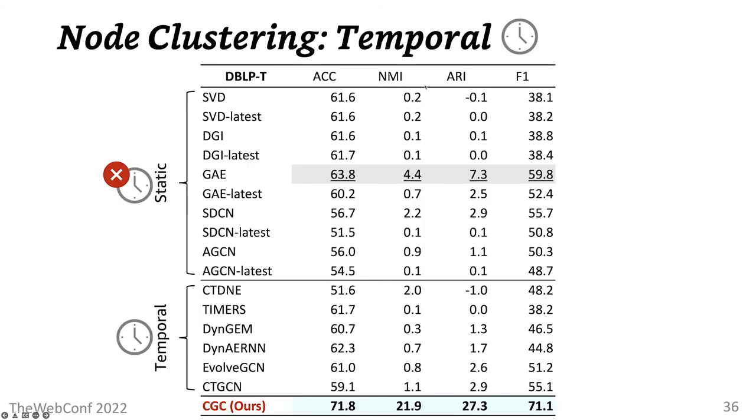We extended the experiment to temporal graph setting. Here, we are reporting the clustering performance averaged over multiple time steps. For static baselines, we perform the clustering using all cumulative graph snapshots by default, and we also report the result obtained with using just the latest snapshot at each time. Again, overall, the proposed method outperforms both static and temporal baselines, achieving nearly 400% higher NMI than the best baseline.